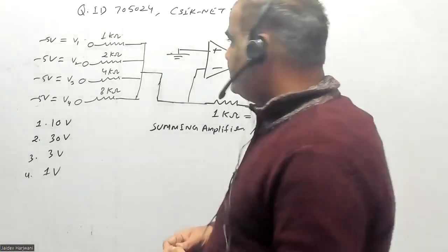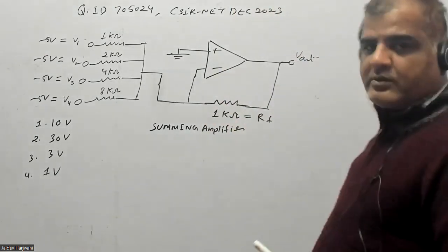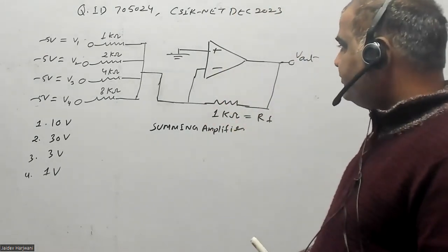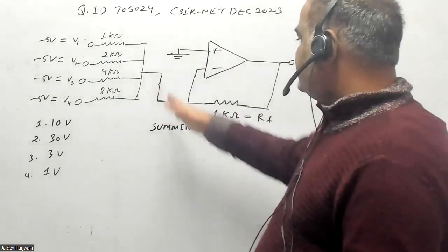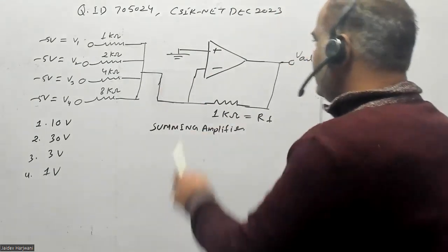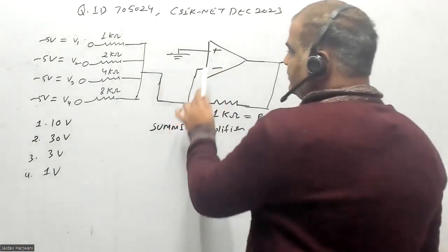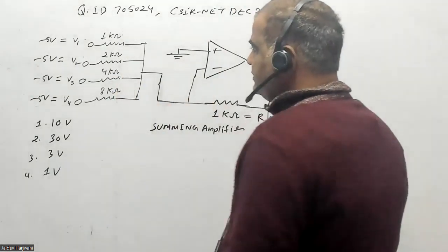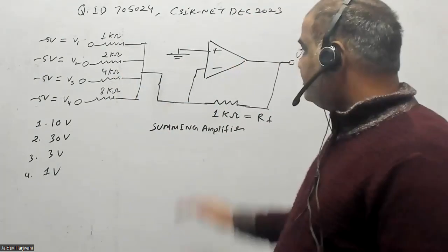Hello students, let's solve one more problem from the CSIR NET December 2023 question paper. They have given you an op-amp circuit. As you can see, this is a summing amplifier. Your non-inverting terminal is grounded and resistances are connected to the inverting terminal.